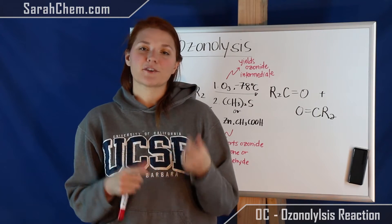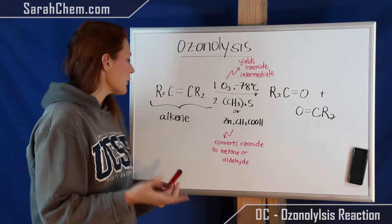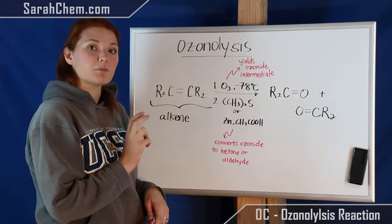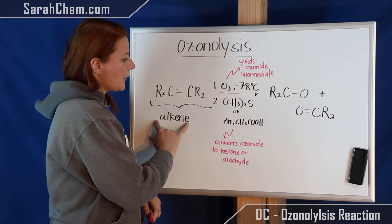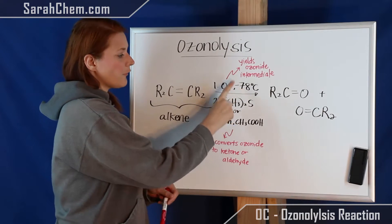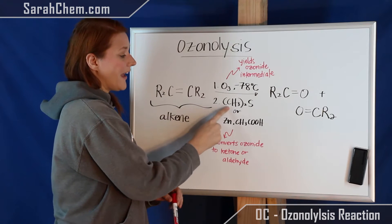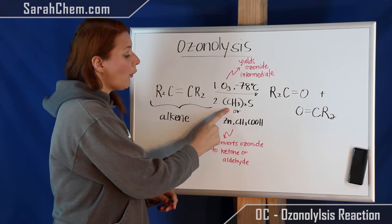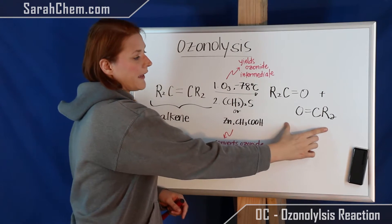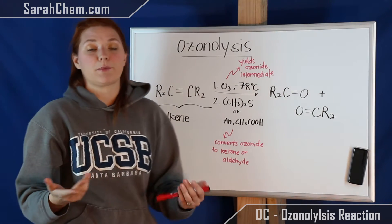First let's get the pieces that are involved in ozonolysis. We've got an alkene - remember an alkene is where you have a double bond between two carbons. We're going to be reacting that with ozone at negative 78 degrees Celsius, and follow that up by reacting it with either dimethyl sulfide or zinc and acetic acid. When we run these reactions we wind up getting a ketone or an aldehyde as our product.